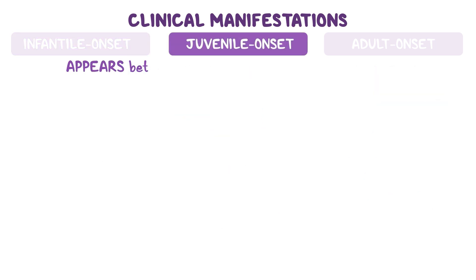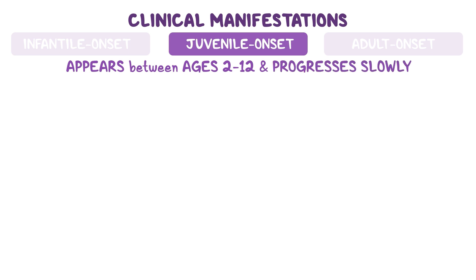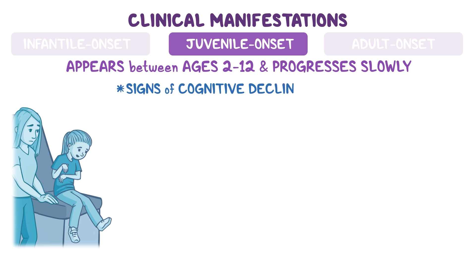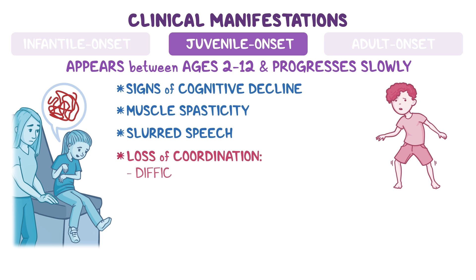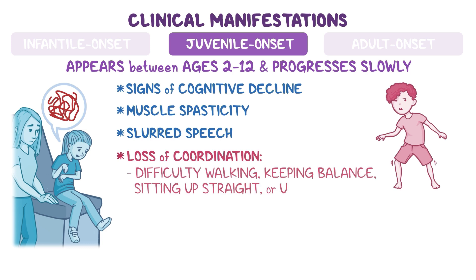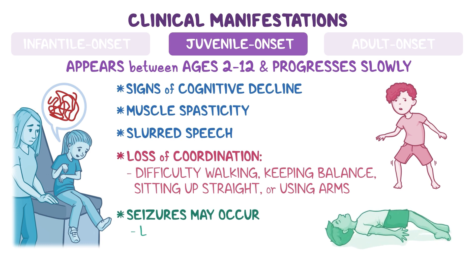The juvenile onset form appears between ages 2 and 12, and generally progresses more slowly. Affected individuals often develop signs of cognitive decline, muscle spasticity, slurred speech, and loss of coordination, such as difficulty walking, keeping balance, sitting up straight, or using their arms. Seizures may occur, though less frequently than in the infantile form, and are often triggered by mild illnesses.